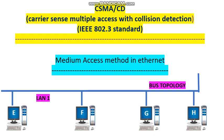First, let us see what is the meaning of medium access method. For example, if station E wants to send data to station F, then station E should have access to the medium or channel in order to send the data. Similarly, if station H wants to send data to station G, station H should also have access to the medium. To access the medium in Ethernet, the stations use CSMA/CD method.